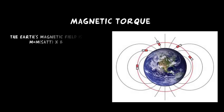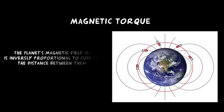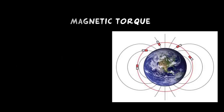The magnetic torque on the satellite is given by the following formula, where b is the magnetic flux density of the central gravitational body. The satellite's magnetic moment could be due to a permanent magnet on the satellite or electric current flowing through the circuits. The planet's magnetic field is inversely proportional to the cube of the distance between them.